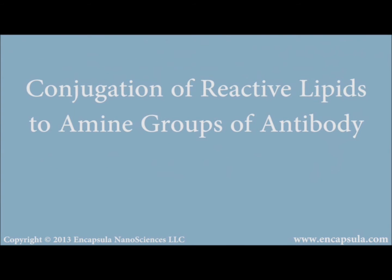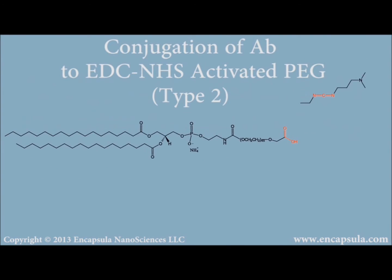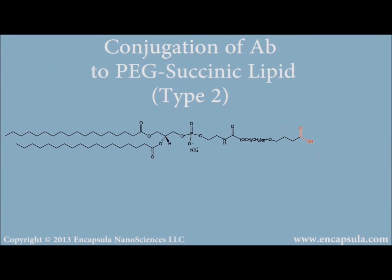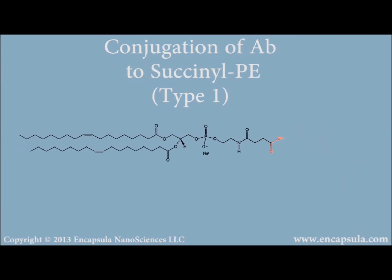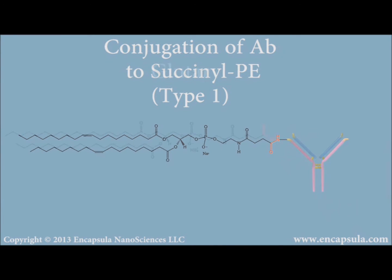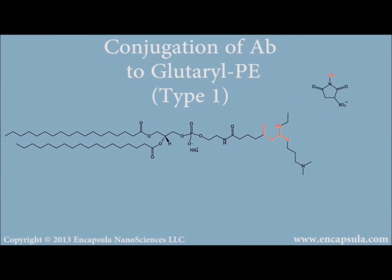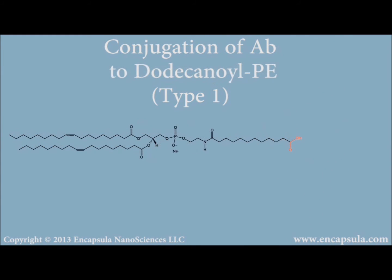Using the same basic chemistry, the amine group on the antibody can form stable amide linkages with carboxylic groups on certain acid lipids such as succinyl PEG PE, succinyl PE, glutaryl PE, or dodecanoyl PE.